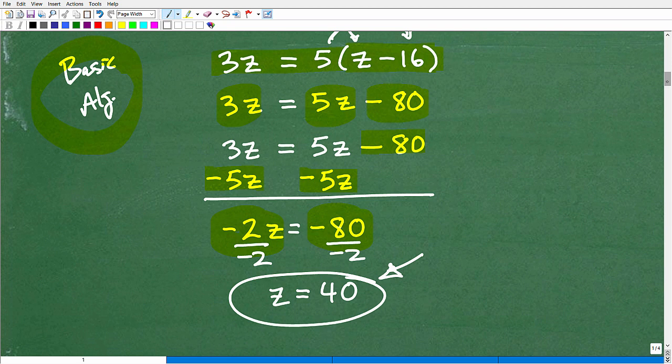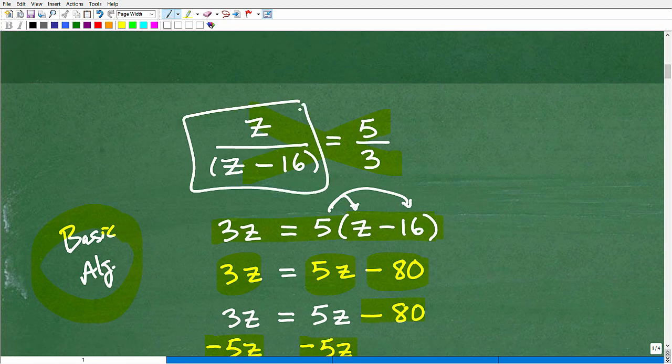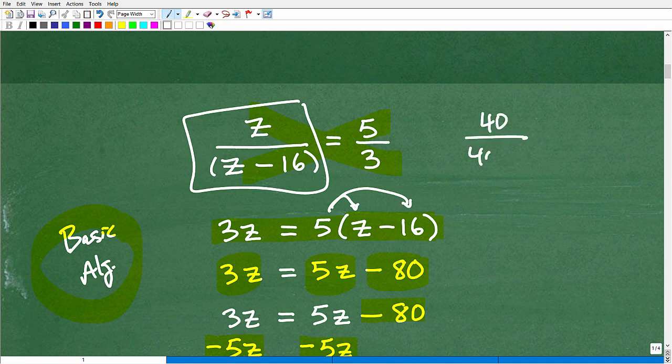So if we put, again, 40 right here, if we put 40 over 40 minus 16, you'll see that that fraction will reduce down to 5 thirds.